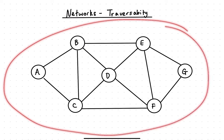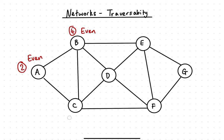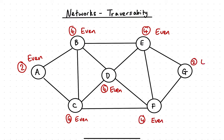The diagram we're currently looking at is an example of fully traversable. To determine this, I look at each node and the number of edges coming off it, and categorise it as either odd or even. Node A has two edges — even. Node B has four edges — even. Node C has four edges — even. Node D has four edges — even. Node E has four edges — even. Node F has four edges — even. Node G has two edges — also even.